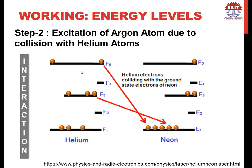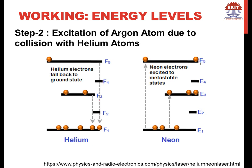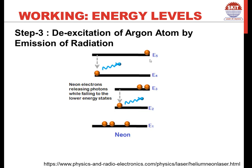These energetic helium atoms interact with neon by collision, and the neon atom reaches higher energy states like E3 and E5 as shown in this screencast. When helium has transferred its energy to neon, it bounces back to its ground state and the neon atoms get excited. So step two is completed — excitation of the neon atom due to collision with helium atoms.